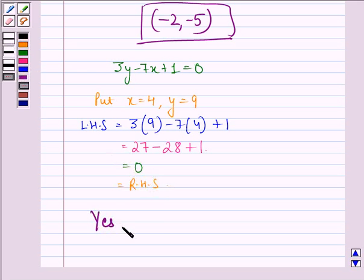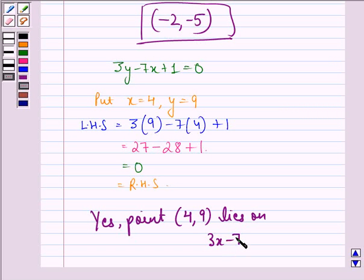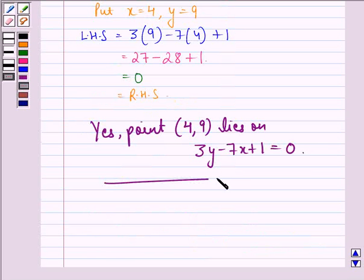Yes, the point 4, 9 lies on 3y minus 7x plus 1 equal to 0. This is our answer to this question. I hope that you understood the solution and enjoyed the session. Have a good day.